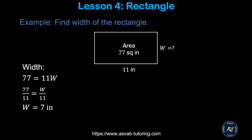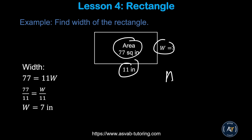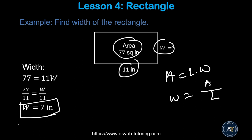In another example, the area is given as 77 and one side is 11. To find the width, use: width = area divided by length, so width = 77 ÷ 11 = 7 inches.